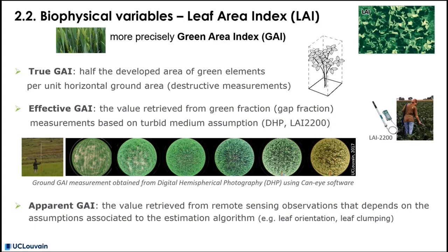The True Green Area Index is defined as half of the developed area of all green elements per unit ground area. This can be measured by destructive measurement, meaning by cutting the plant.